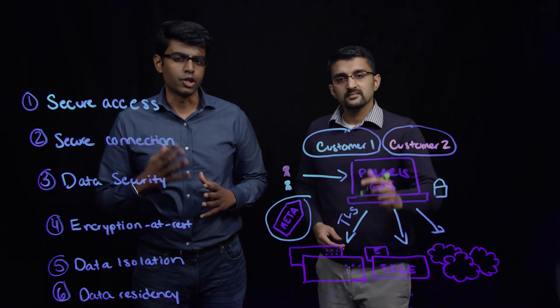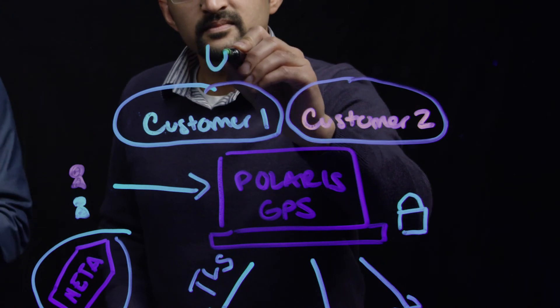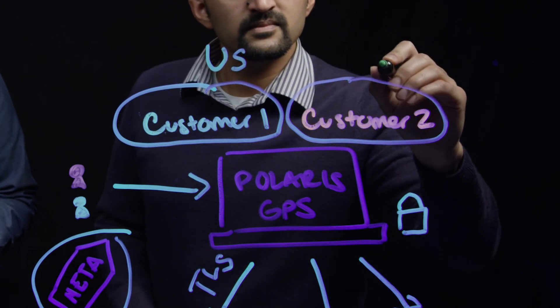For example, a U.S. customer can be provisioned in a U.S. data center and a U.K. customer can be provisioned in the U.K.